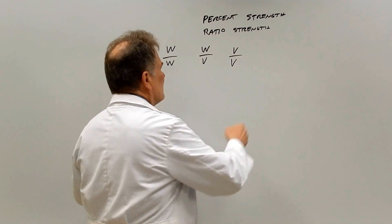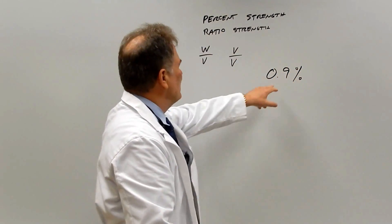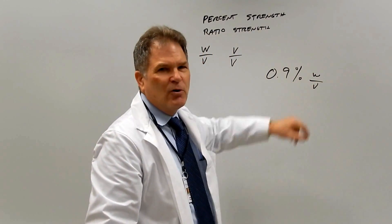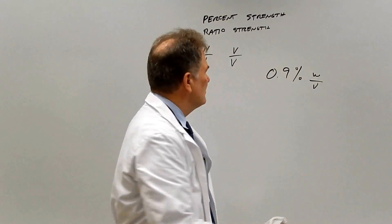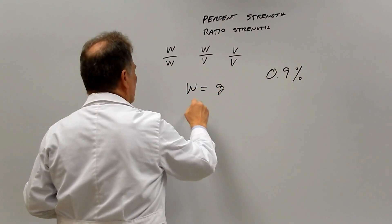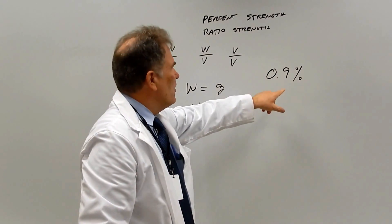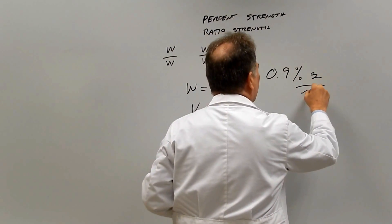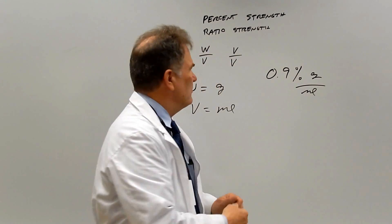Once you identify 0.9% as weight-volume, you need to convert it into units usable in equations. Weight is always grams, and volume is always mL. So 0.9% weight-volume becomes 0.9 grams per mL — now it's in a form you can use in your calculations.